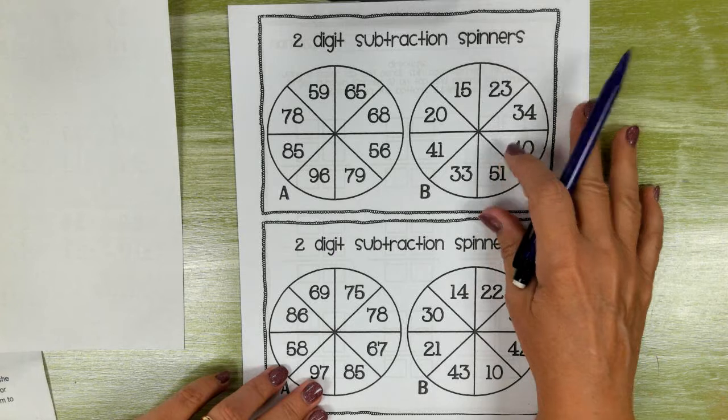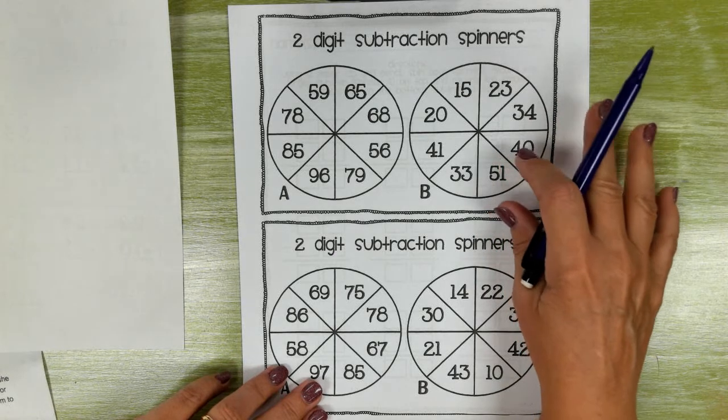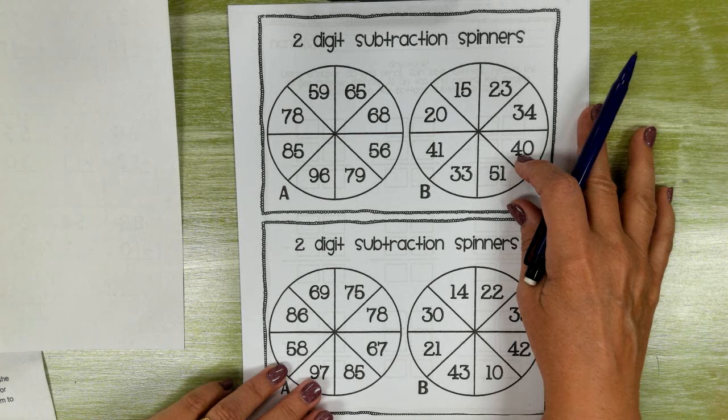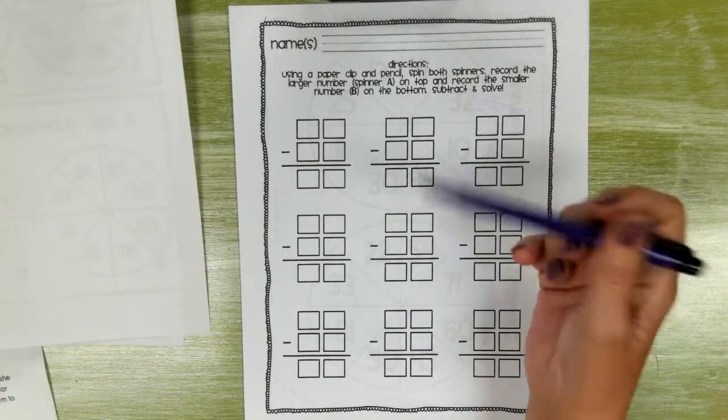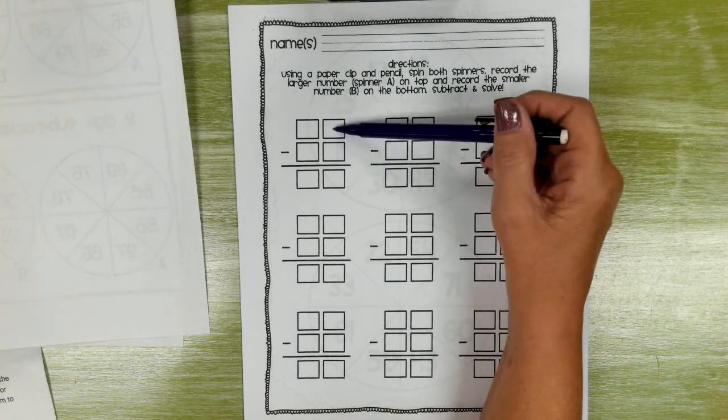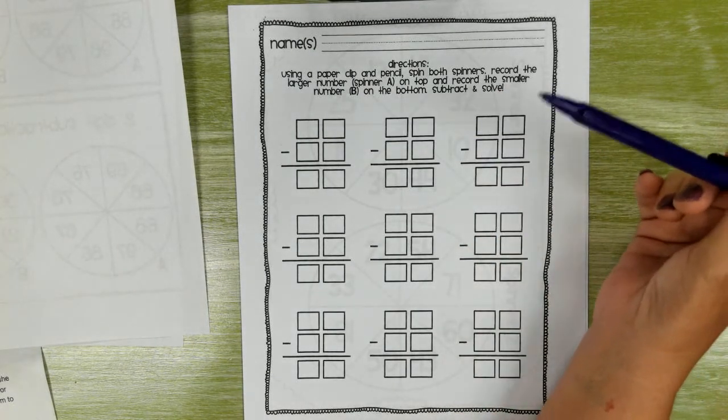Now, I did not put these spinners in your assignment. I added a digital spinner, so you will spin for numbers and you'll spin twice and put the biggest number on top.